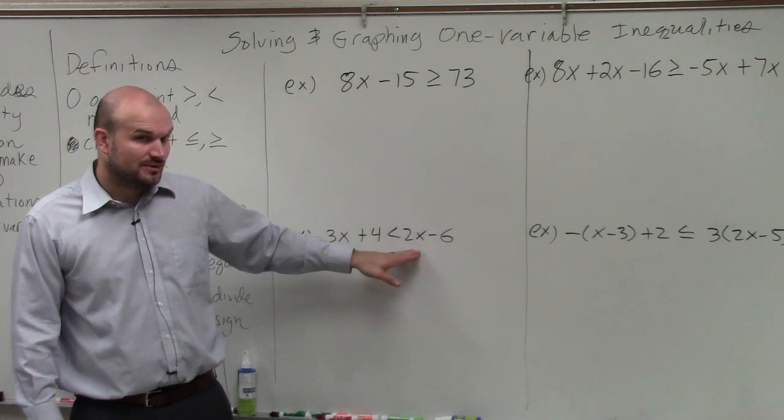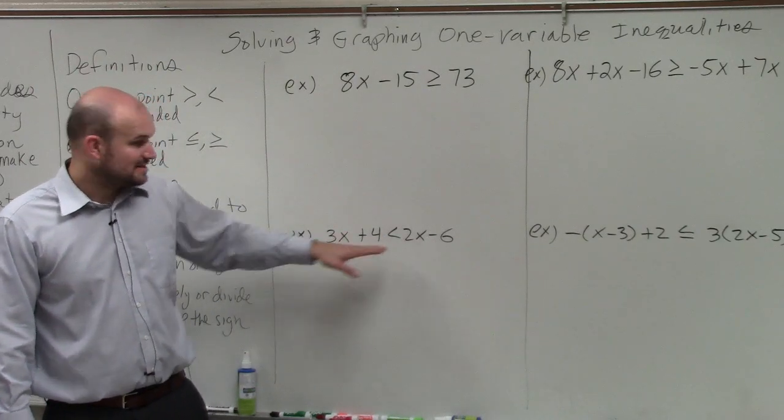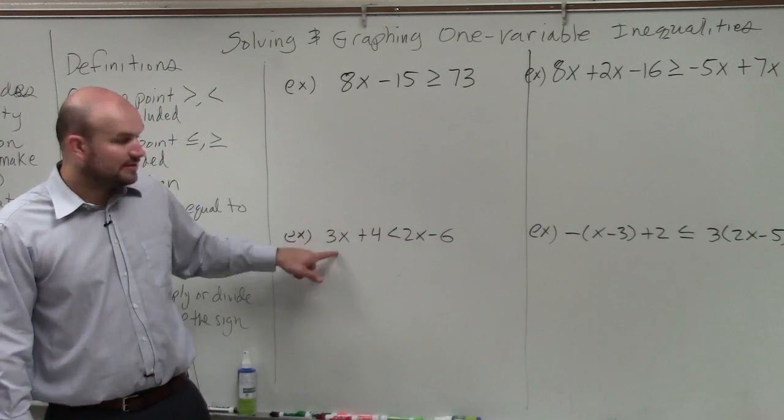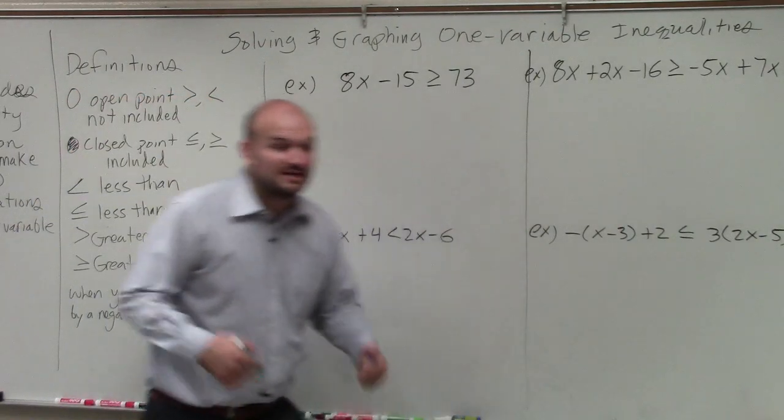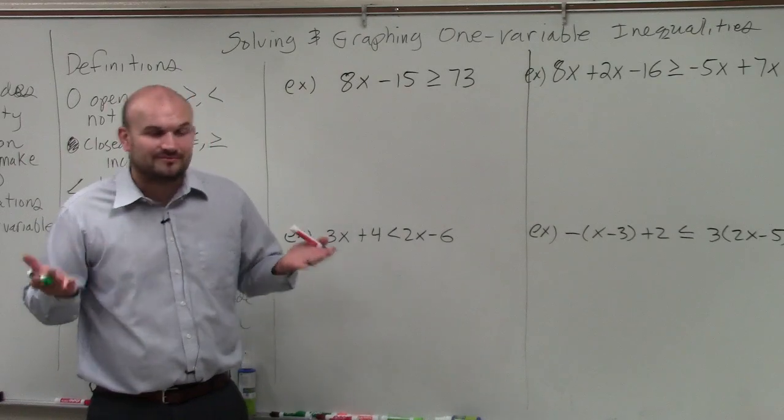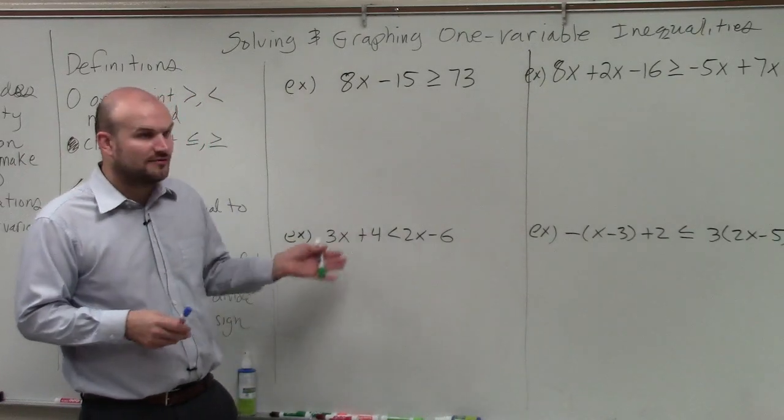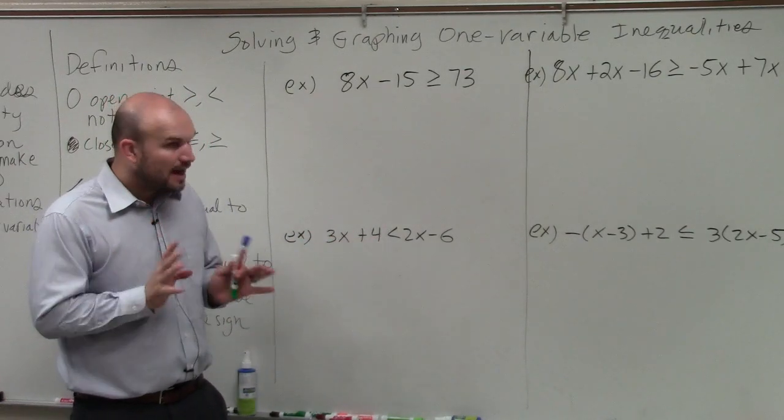You can either get rid of the 2x on the right side, so by subtracting 2x's on both sides, or you can get rid of the 3x on the left side. And it doesn't matter which one you do. And especially for equations, it really depends if you want to solve for x on the left or the right-hand side. However, in this case,